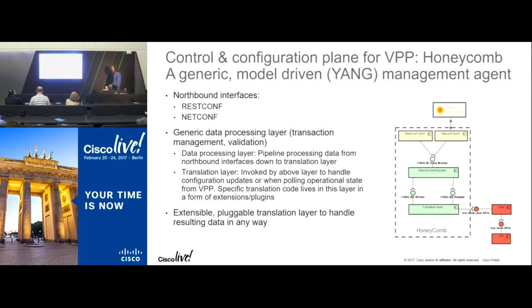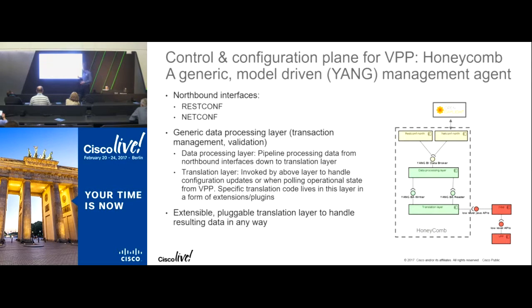Another gap is configuration: VPP is a data plane, not a control plane, so someone needs to program the routes. In the fd.io project we don't mandate who does that. But we built an infrastructure on top that writes to the native APIs and provides northbound REST or NETCONF interfaces to the box — because people want REST or NETCONF rather than native C-level APIs — so that a network controller like OpenDaylight, or NSO, or anything else can remotely program VPP.